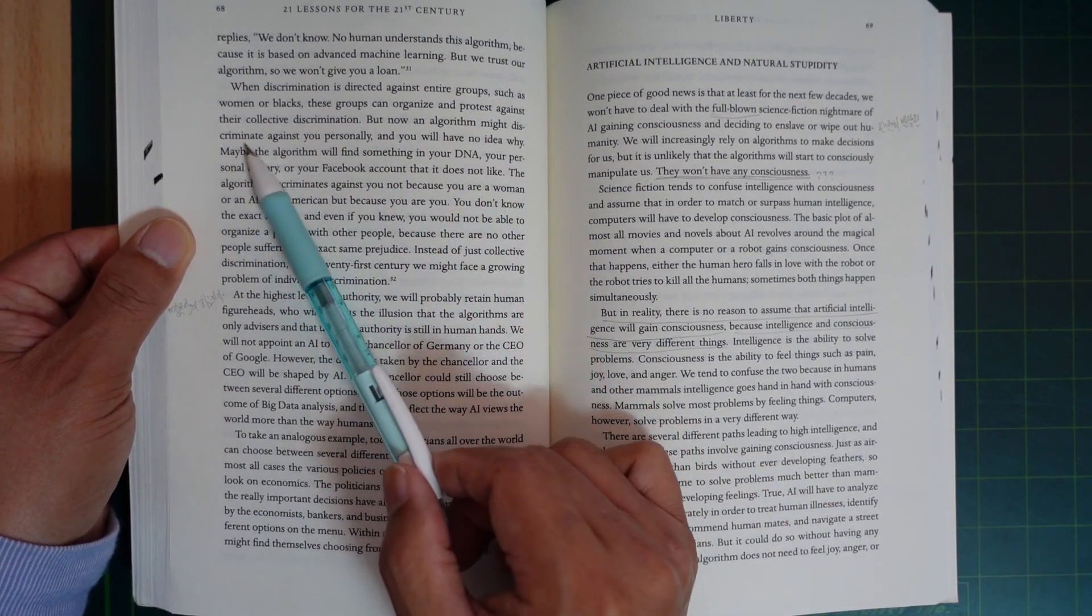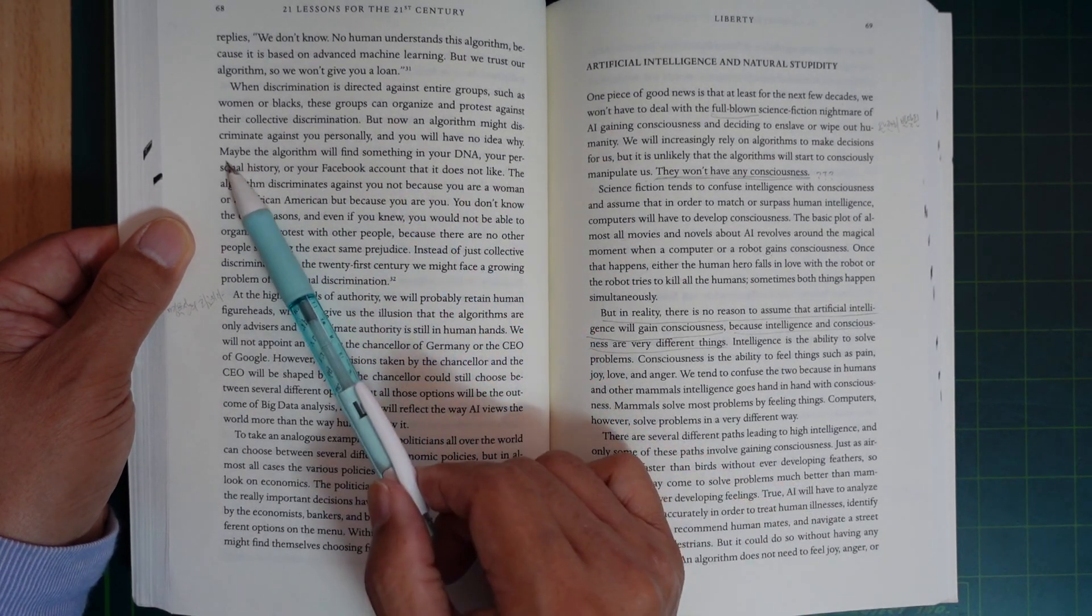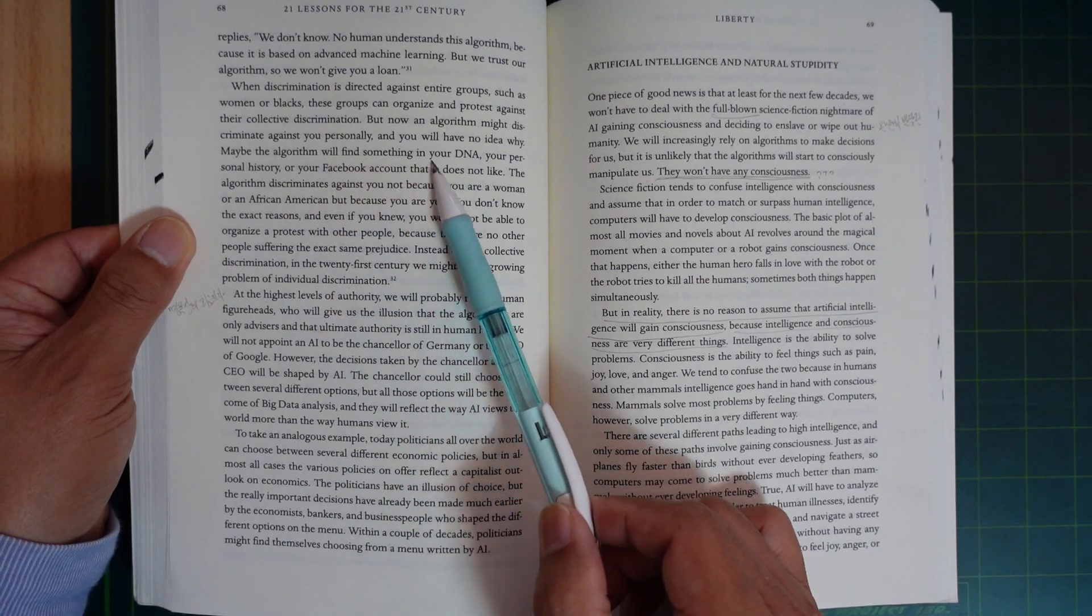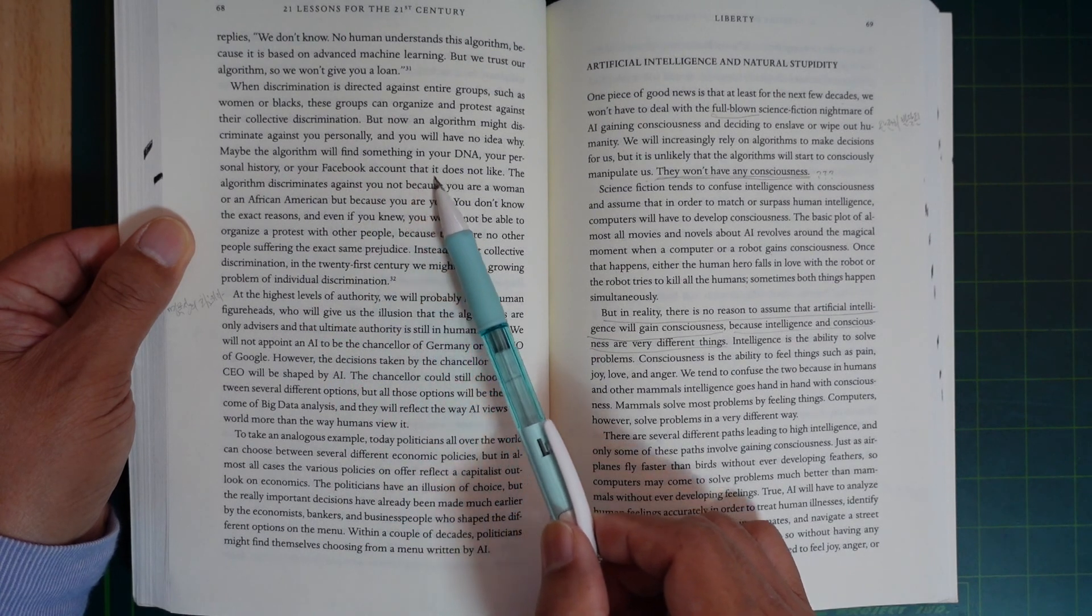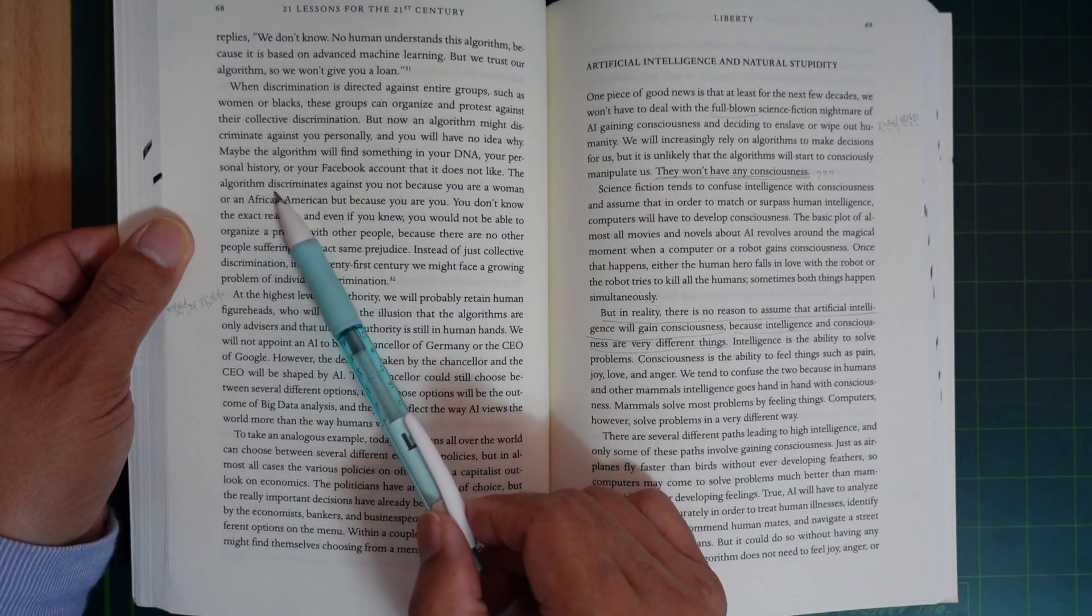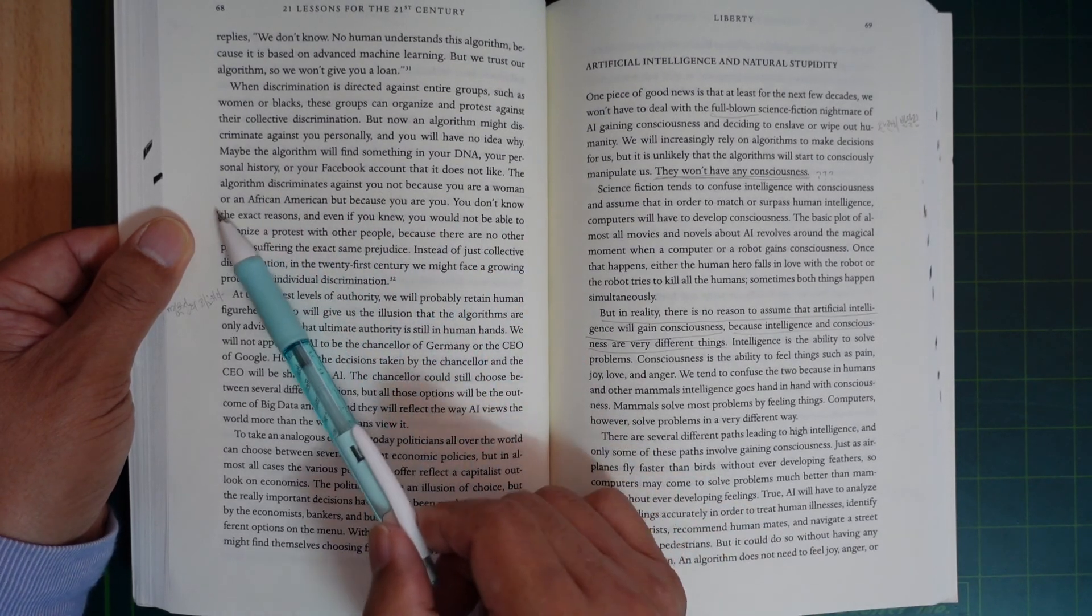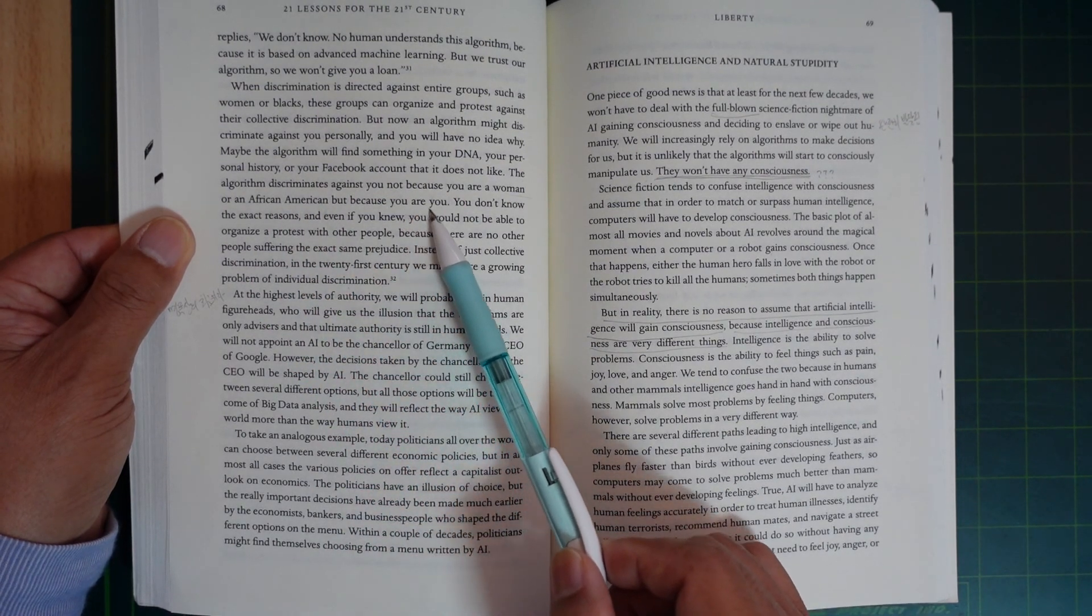But now the algorithm might discriminate against you personally, and you will have no idea why. Maybe the algorithm found something in your DNA, your personal history, or your Facebook account that it does not like.